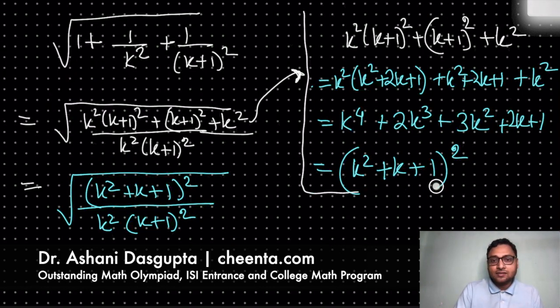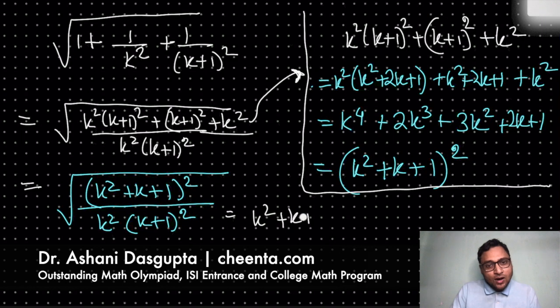So this is equal to, now we can get rid of the square root. This is (k squared plus k plus 1) divided by k into (k+1). Great.